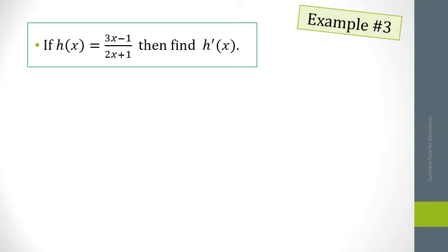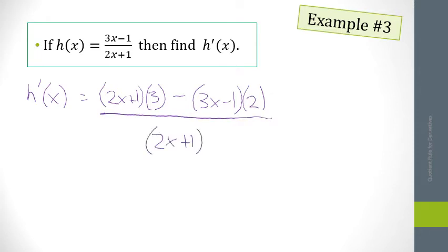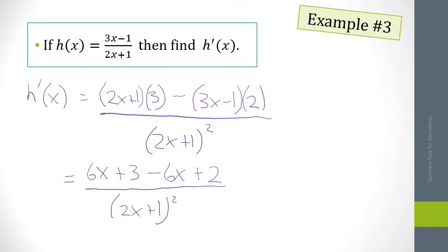Stop the video and try this one on your own — completely simplify it if possible — then check your answer. Hopefully you actually stopped and tried it. We have bottom function times the derivative of the top, minus top function (notice the parentheses), times the derivative of the bottom, all over the bottom squared. Simplifying gives 6x + 3 minus 6x + 2, and those terms cancel, giving a final answer of 5 over (2x + 1) squared.